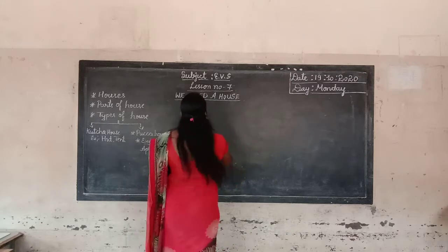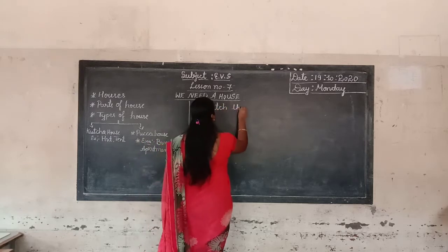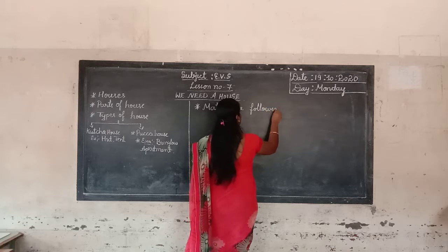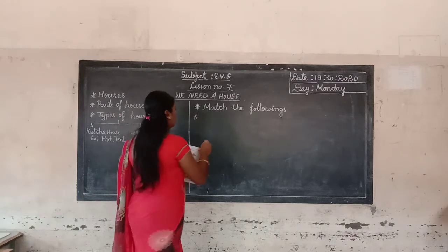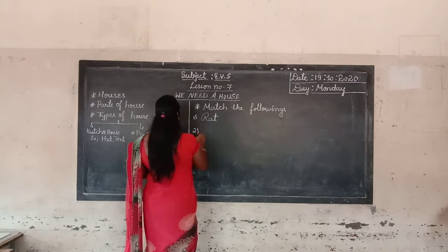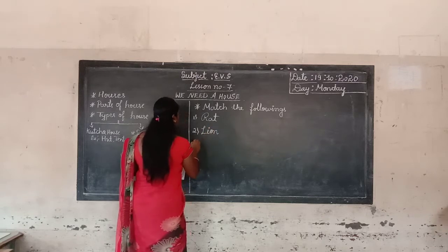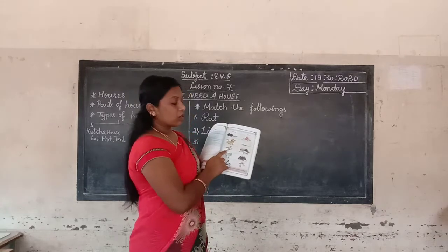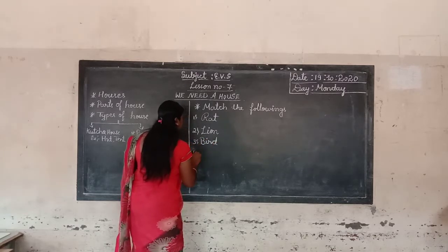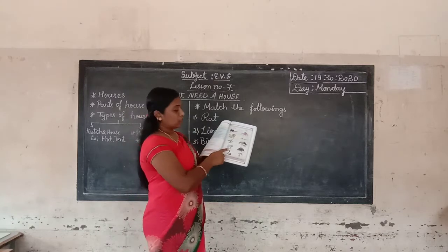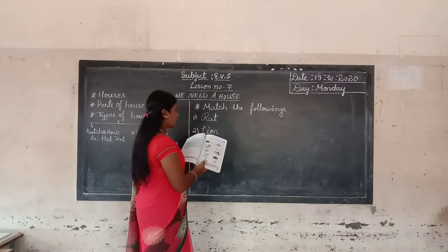Let's match the following animals to their homes. Look at the pictures and identify each animal. The first one is a rat. The next one is a lion. Then there is a bird. Next is a cow. And next is a snake.